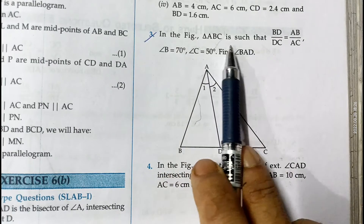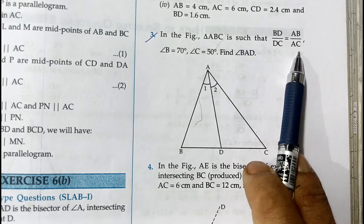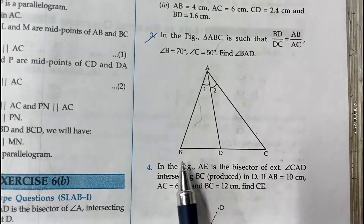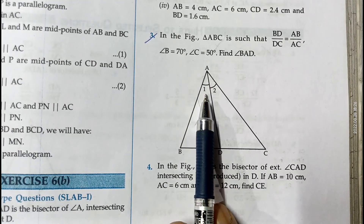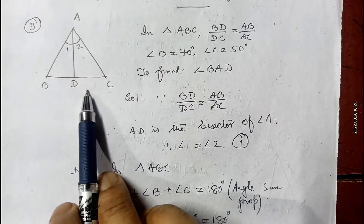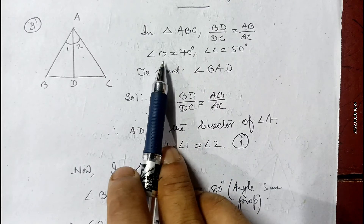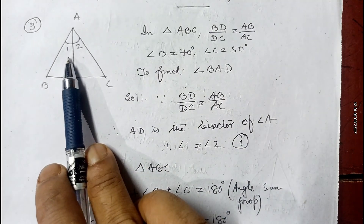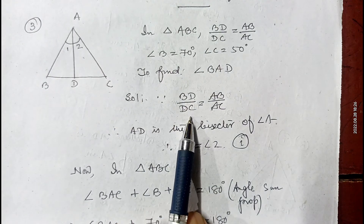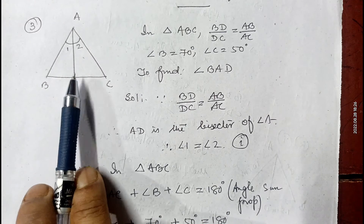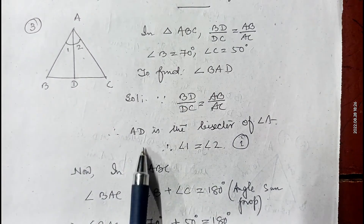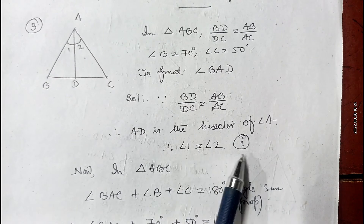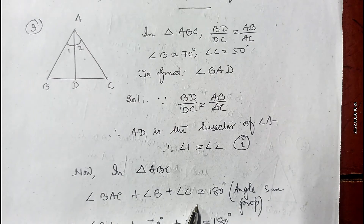In question number 3, in triangle ABC, BD by CD equals AB by AC, angle B is 70 degrees, angle C is 50 degrees, and we have to find angle BAD. Since BD by CD equals AB by AC, this means AD is the bisector of angle BAC, so angle 1 equals angle 2. By the angle sum property, angle BAC plus 70 plus 50 equals 180 degrees.